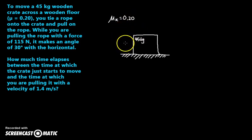I tie a rope onto the crate and pull on the rope. While you are pulling the rope with a force of 150 newtons, it makes an angle of 30 degrees with the horizontal. So if I had to look at that, there's my horizontal and it makes an angle of 30 degrees with it. I'll do it from the center. I will be pulling this way with 115 newtons, and this is an angle of 30 degrees. And that's all I got.